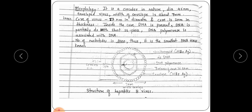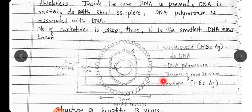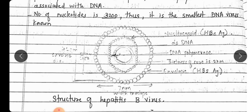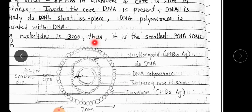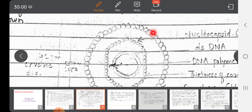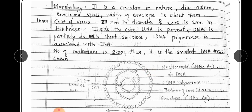Now towards the morphology of HBV. The virus is circular in nature, as you can see here. It has a round shape with a diameter of 42 nm — that is the envelope diameter.